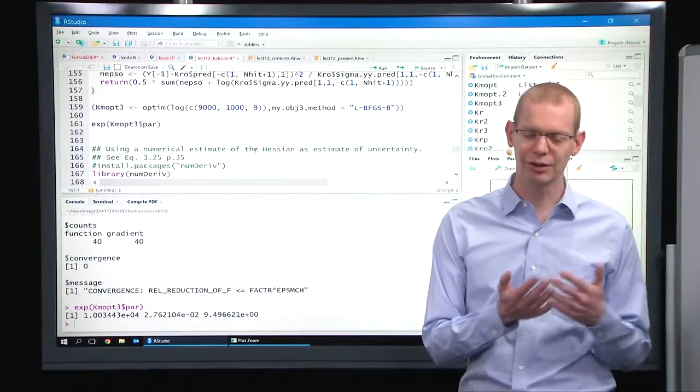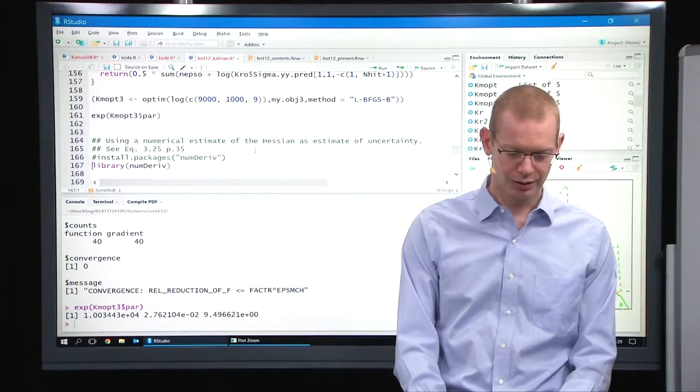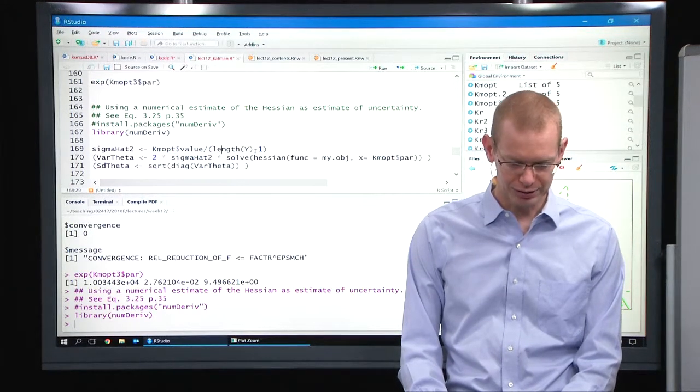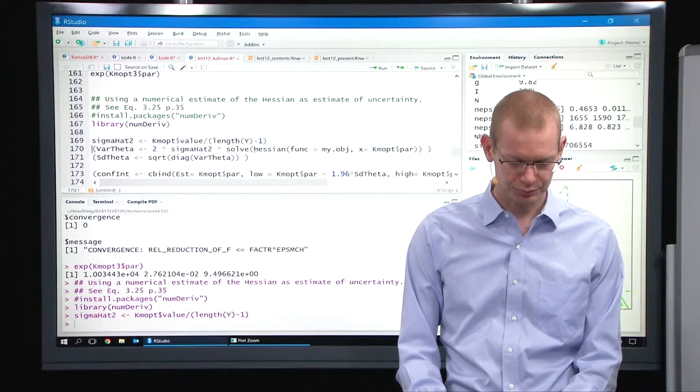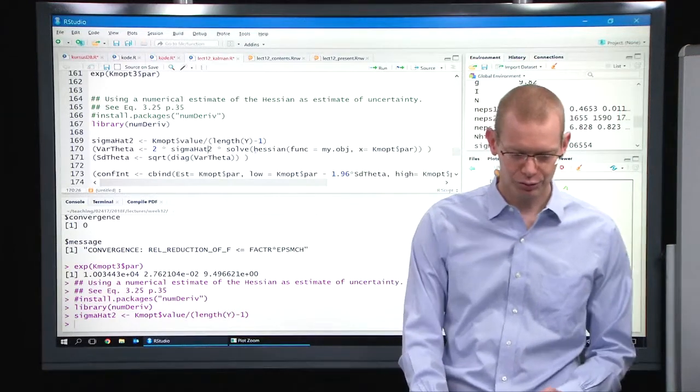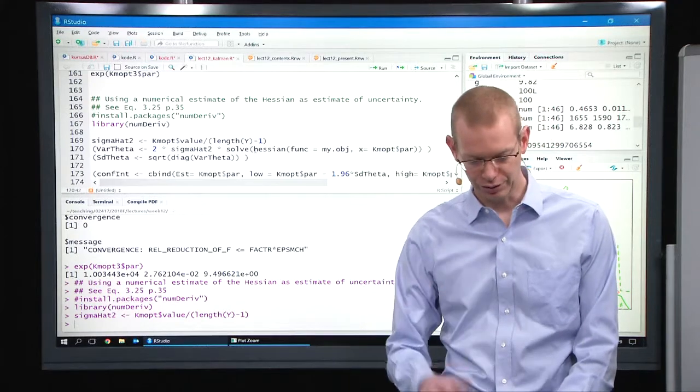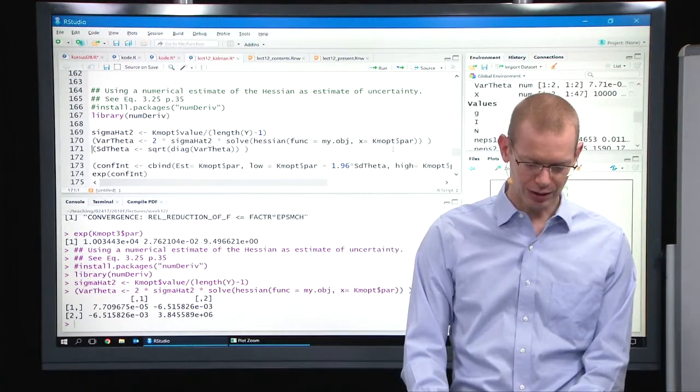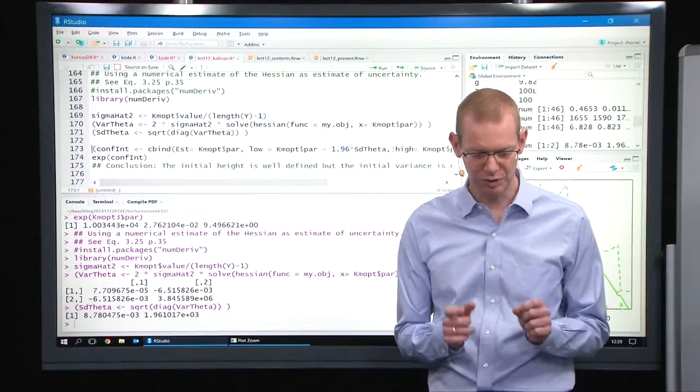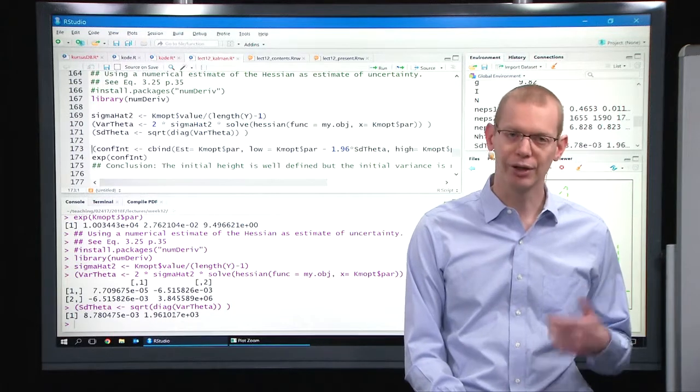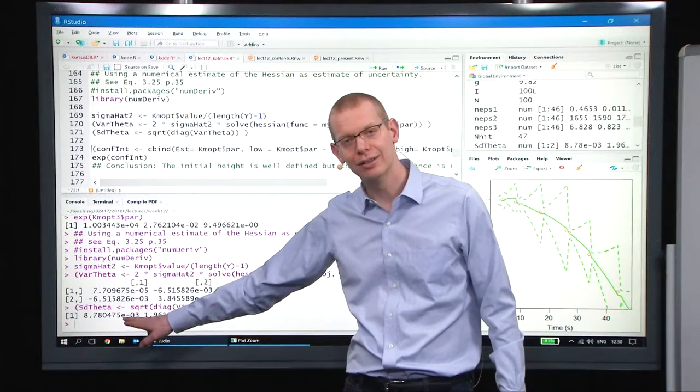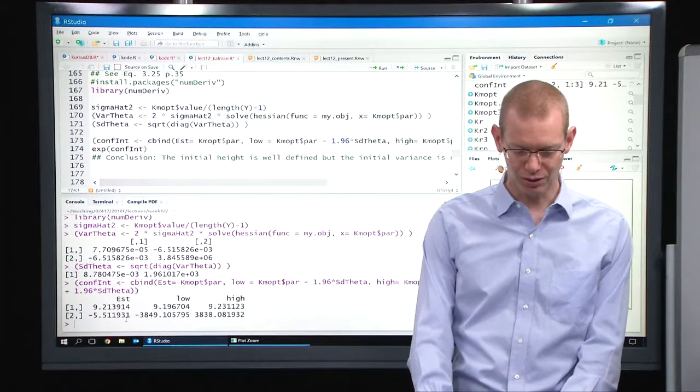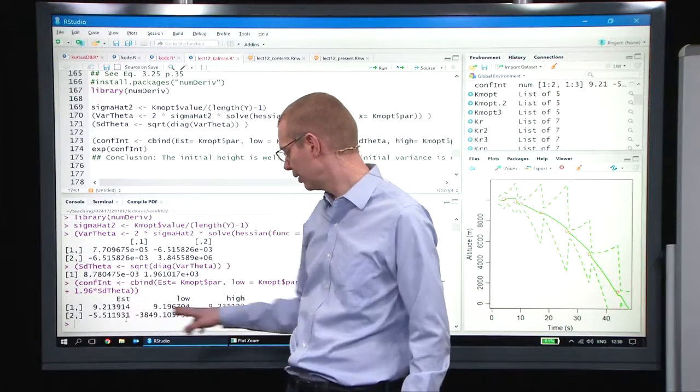So what is the uncertainty of all our estimates? That's the next part. What was said is we can use the second-order derivative or numerical approximation of the Hessian. There's a package called numderiv for numerical derivatives. Let's first look at the objective value and normalize it to get an estimate of sigma hat squared. And then the variance here is then the two times the sigma hat, and then the inverse Hessian of the objective function in the place where we did the optimization. If we look at what is on the standard deviation of the two estimated parameters, it's quite large for the second state, but it's small for the height. So the height is well-defined, whereas the initial variance is ill-defined.